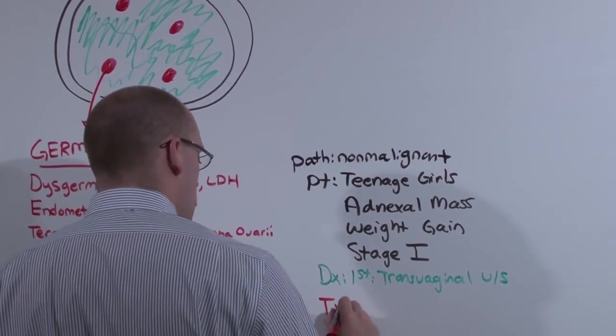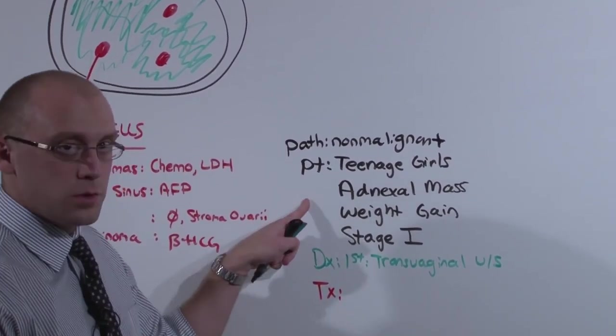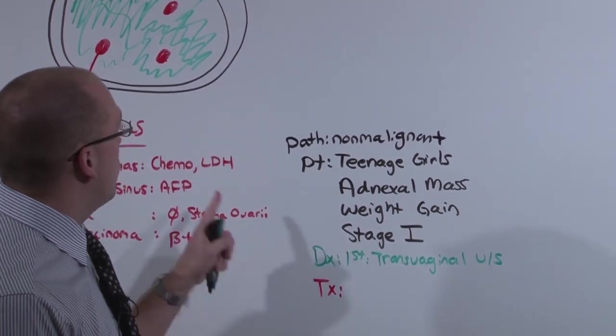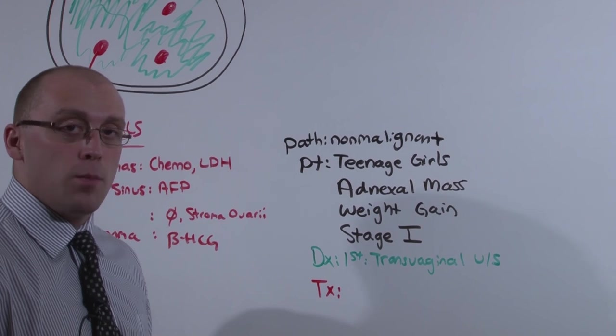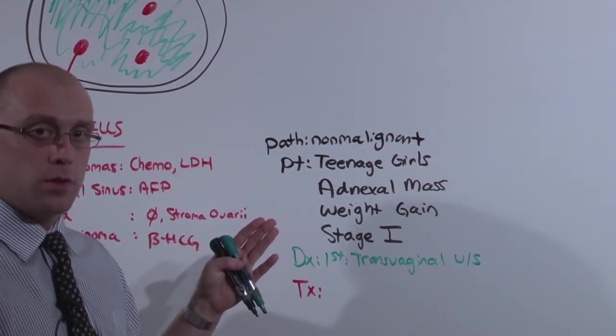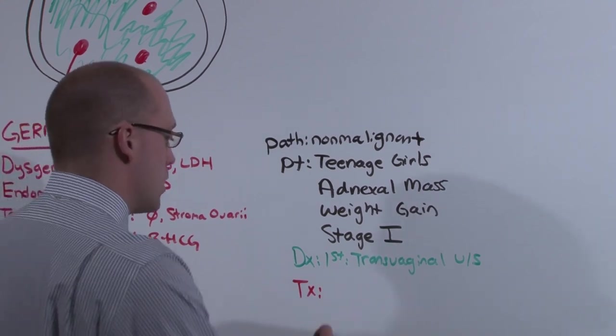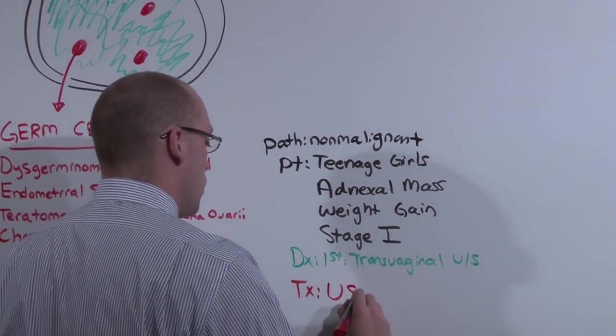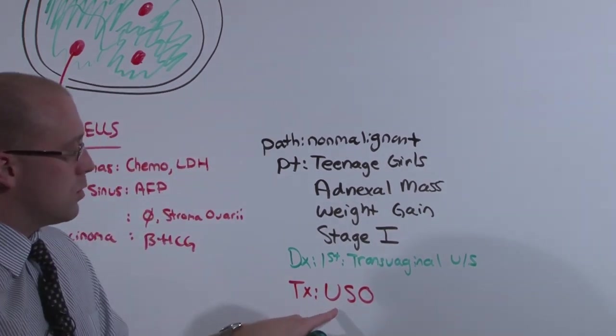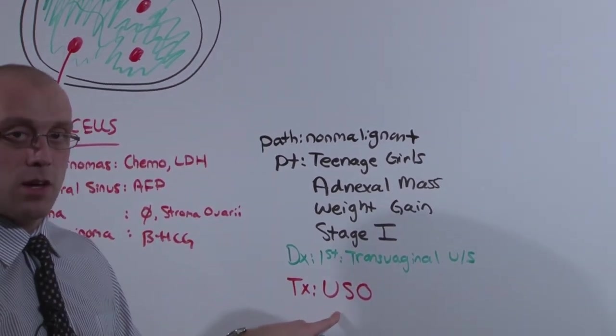To treat it, you want to be conservative. Remember, these are young girls who eventually want to have kids. You have to get rid of it. But rather than taking out all of their GYN structures, we can simply do a unilateral salpingo-oophorectomy, leave the rest of it, preserve her ability to continue through puberty and to have kids later on.